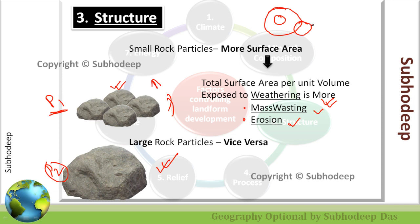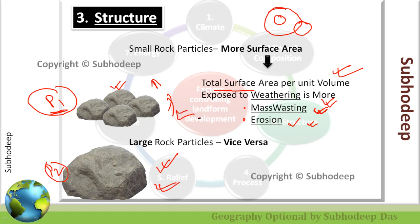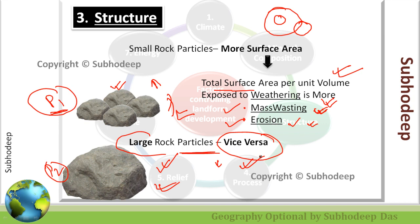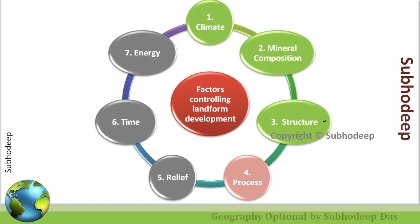Mass wasting — for example, a landslide — is quite different from erosion, because erosion happens either by fluvial agents or by aeolian agents, but mass wasting happens by the action of gravity. In P1's case the area per unit volume is much more than in P2's case, so that region is more prone to weathering, mass wasting, and erosion. For larger rocks the total surface area per unit volume is lesser, so that region is less prone to weathering, erosion, and mass wasting. Structure is therefore also a major factor controlling landform development.